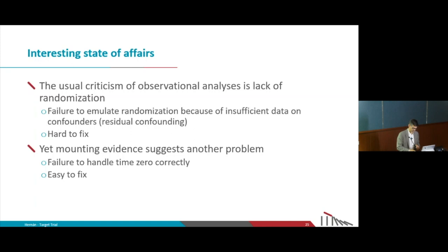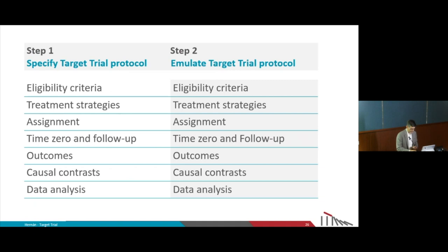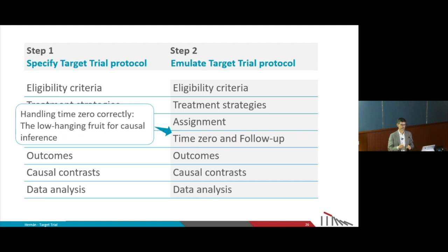These problems — selection bias and immortal time bias — have nothing to do with lack of randomization, but with how the start of follow-up is handled: time zero. I'm going to argue that if we want to improve causal inference from observational studies, the first thing we have to focus on is handling time zero correctly. That's where we can make a huge difference in the quality of an observational study.